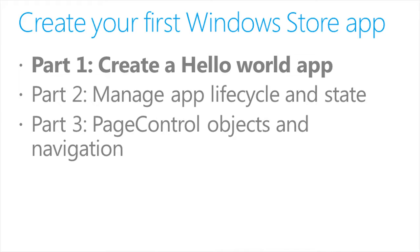In part two, Manage App Lifecycle and State, we'll discuss the app lifecycle and extend the Hello World app by storing app data in Windows roaming settings and saving session state data using the WinJS application session state object. In part three, Page Control Objects and Navigation, we'll migrate our app to use the navigation app template and page control objects, and add an app bar to navigate between pages using the WinJS navigation service.